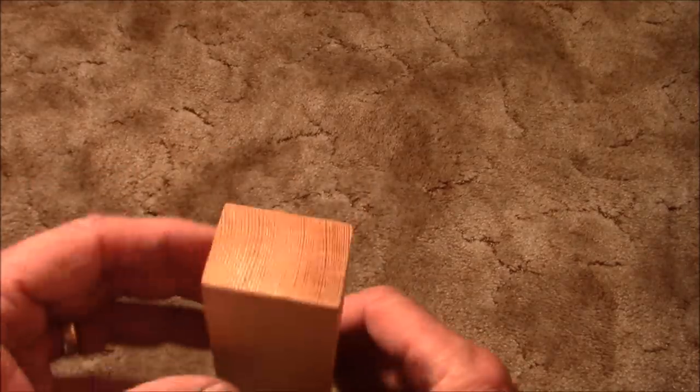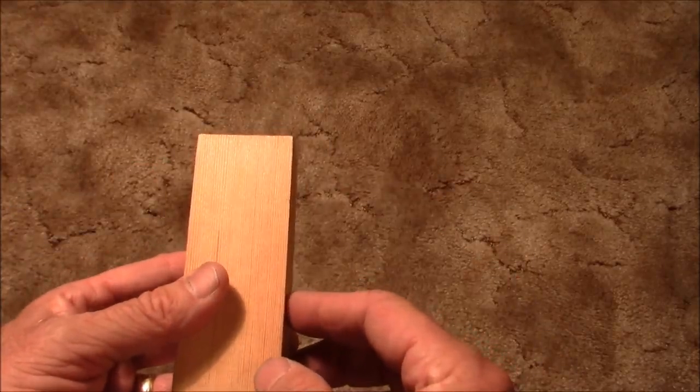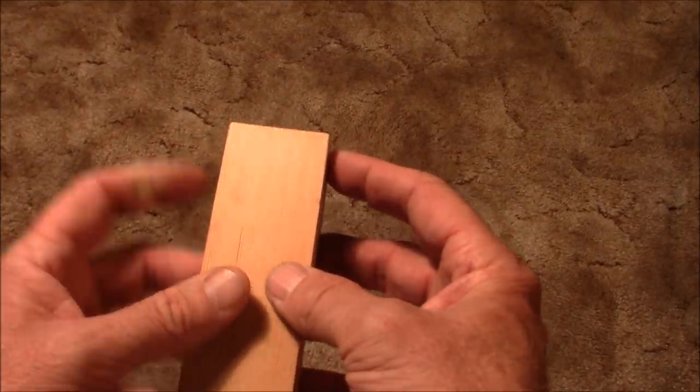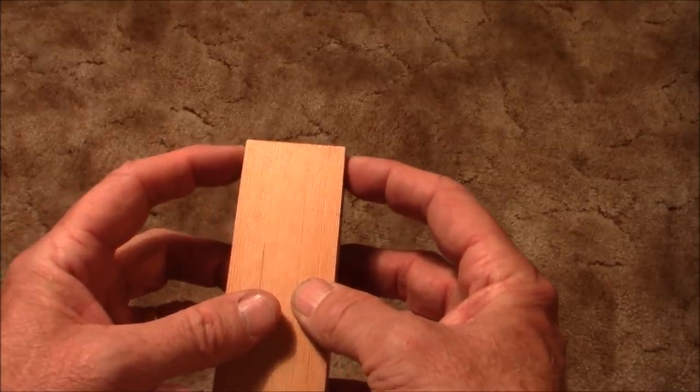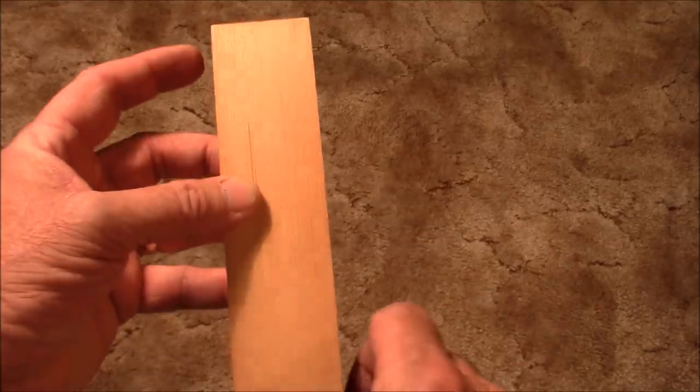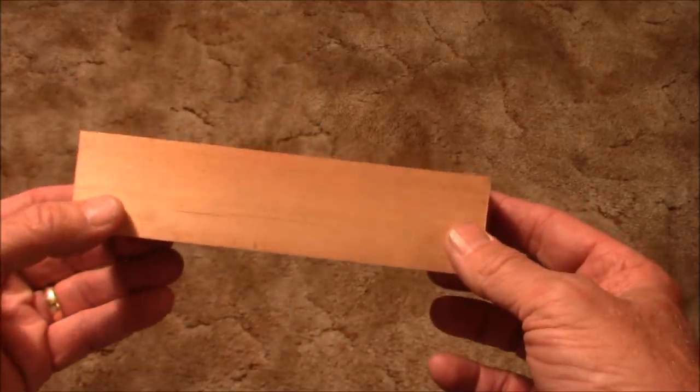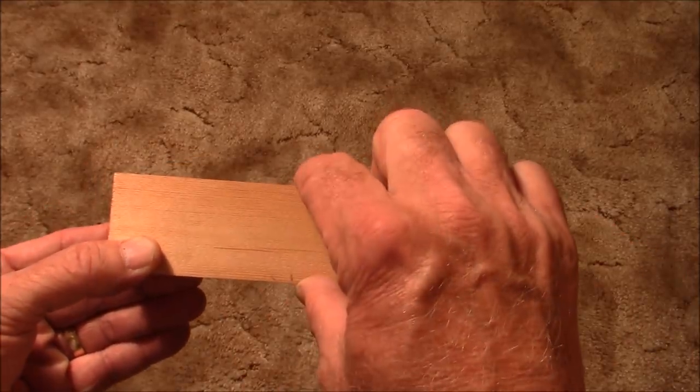If you get a good block like this that does have a slight taper, what you can do to fix that is put a piece of tape on the thin end on each side so that the width at one end is the same as the other. That way when you rest it on your drilling block, the sides will be parallel to each other.